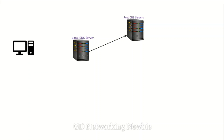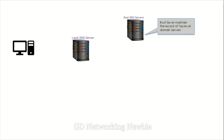The root DNS server, after receiving that request, will not have the actual IP address for google.com. But the root server maintains a record of top-level domain servers. For example, if we are looking for the IP address of google.com, the root DNS server will look at the top-level part of the domain name and send back an IP address of the top-level domain server that can help find the IP address for google.com.